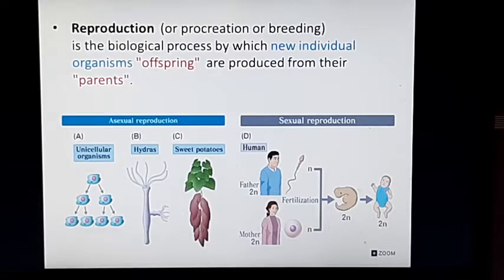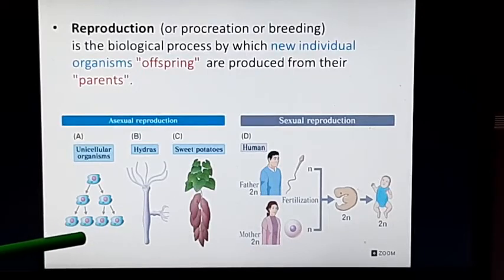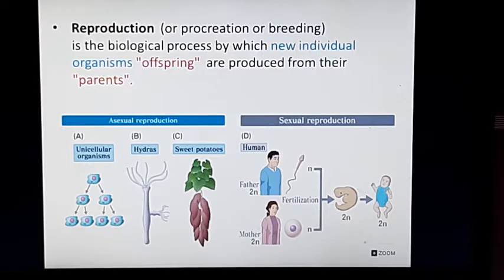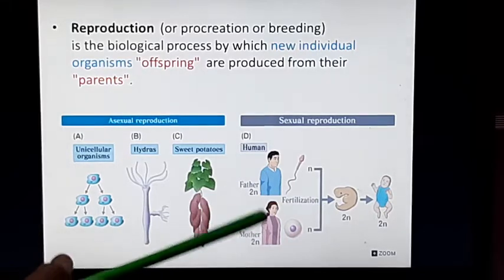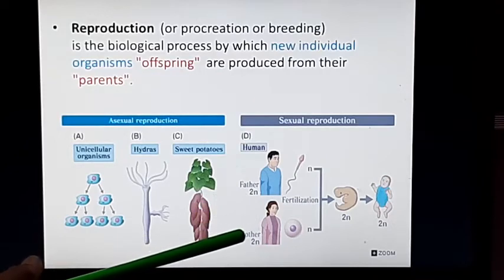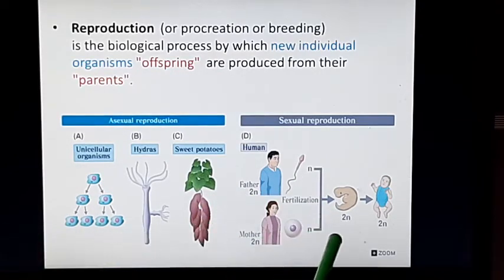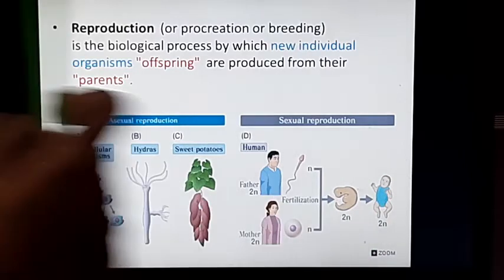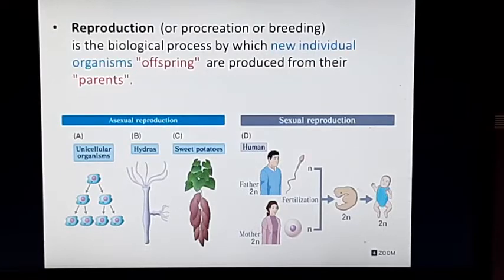In asexual reproduction, new individuals are produced by any means other than fusion of sex gametes. Only one parent is involved and there is no production of sex gametes. Meiosis, the division by which chromosome number is reduced to half, does not occur in asexual reproduction. Whereas in sexual reproduction, both parents are involved, providing their gamete cells which fuse to form a zygote, and this zygote develops into a new organism. Gametes are formed because of meiosis, and further fusion of gametes takes place.